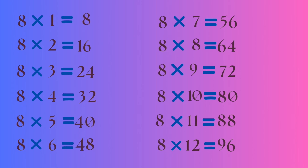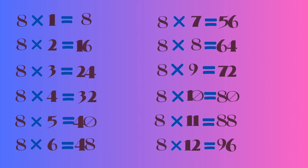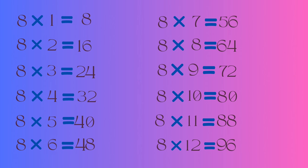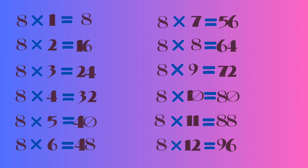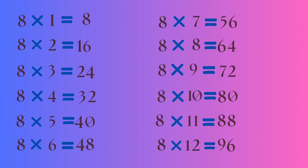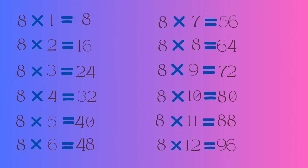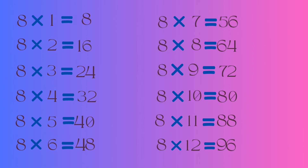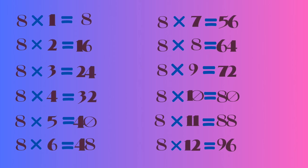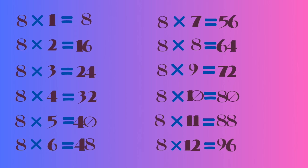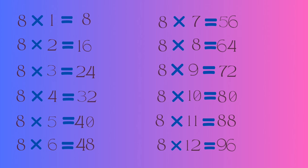8 ones are 8, 8 twos are 16, 8 threes are 24, 8 fours are 32, 8 fives are 40, 8 sixes are 48, 8 sevens are 56, 8 eights are 64, 8 nines are 72.